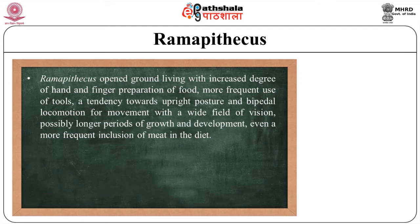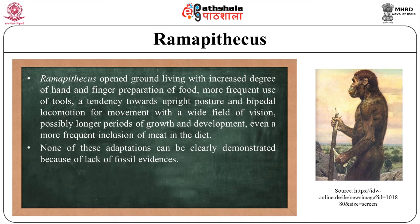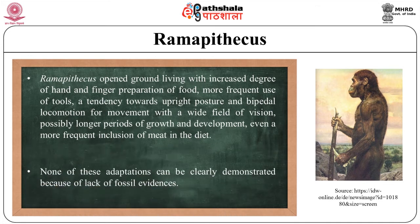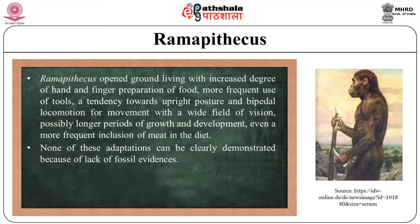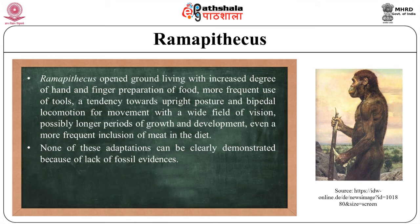The possible adaptations that Ramapithecus made to open ground living include an increased degree of hand and finger preparation of food, perhaps more frequent use of tools in such preparation, a tendency towards upright posture and bipedal locomotion for movement with a wide field of vision through tall grasses of the open plains, possibly longer periods of growth and development, and perhaps even more frequent inclusion of meat in the diet. None of these adaptations can be clearly demonstrated because of lack of fossil evidence.